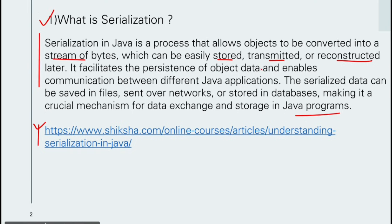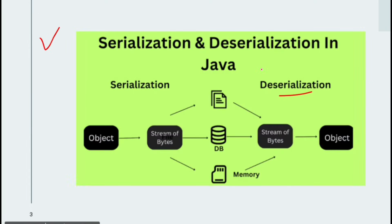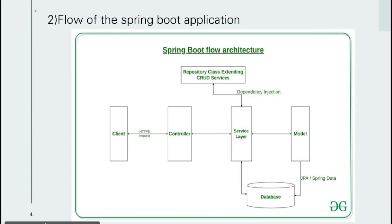Moving on to our second question: the flow of a Spring Boot application. The flow works like this — a client makes a request to our controller, then from the controller to the service layer, and then from the service layer to the model.